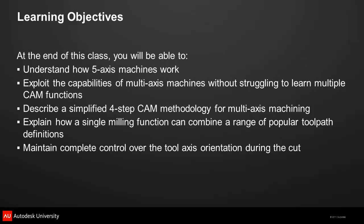At the end of this class, you will be able to understand how 5-axis machines work, exploit the capabilities of multi-axis machines without struggling to learn multiple CAM functions, describe a simplified 4-step CAM methodology for multi-axis machining, explain how a single milling function can combine a range of popular toolpath definitions, and maintain complete control over the tool axis orientation during the cut.